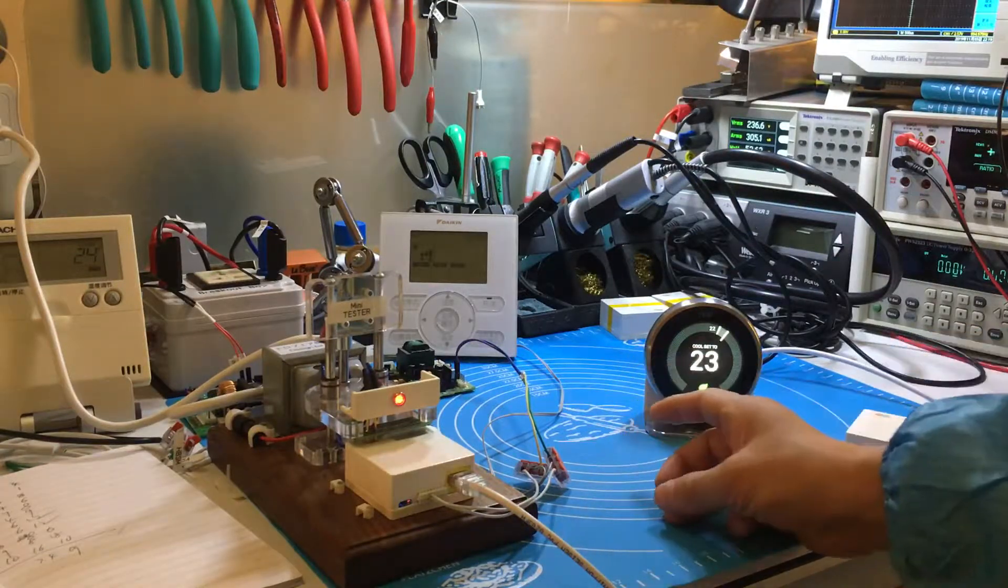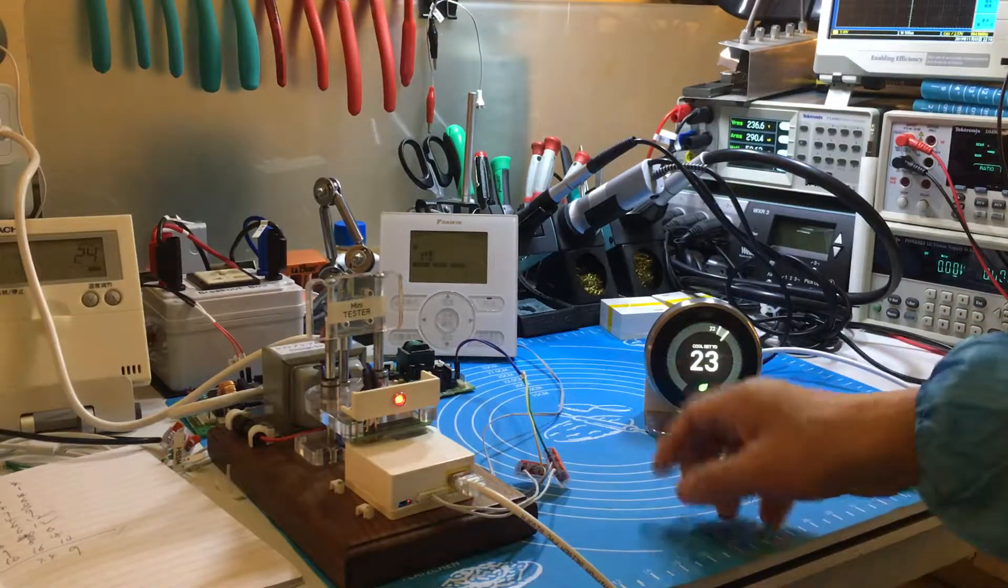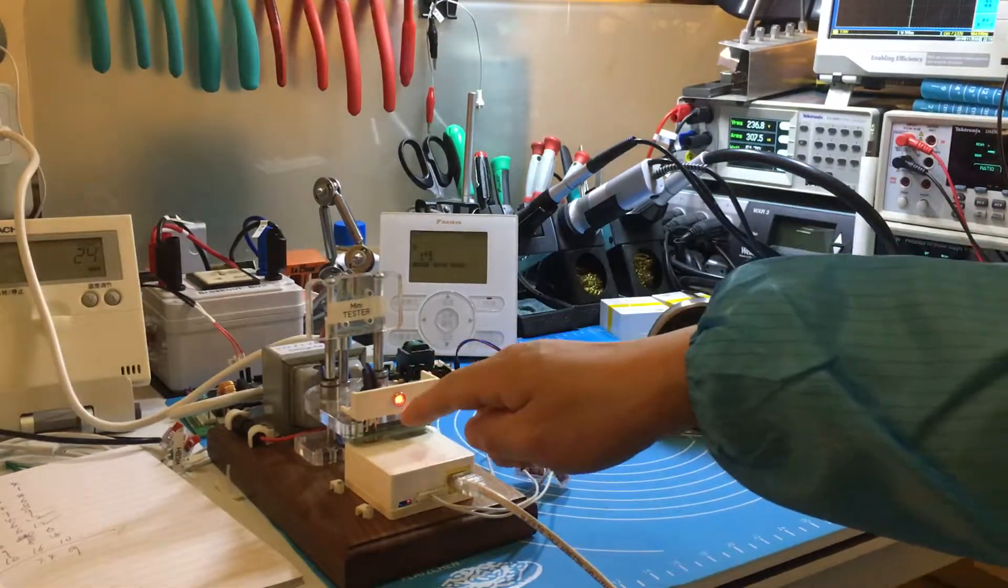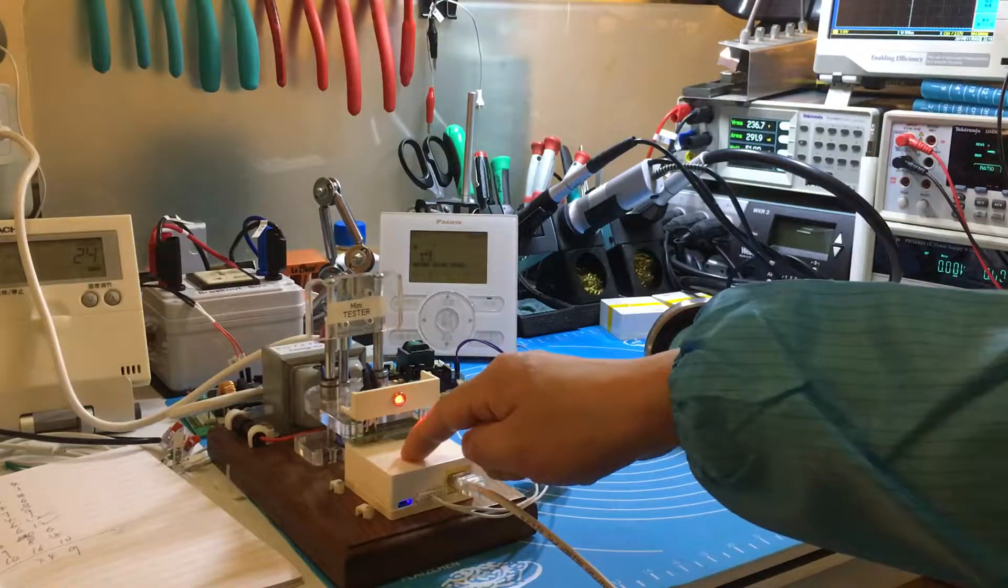The control lines are the Daikin thermostat control line, just to connect together. Another line is the power line. We supply the power for the adapter.